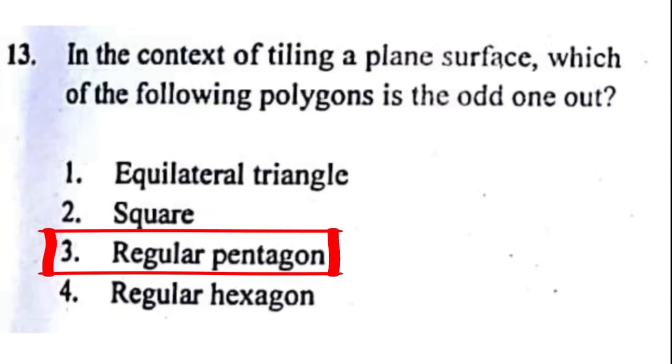Next problem, problem number 13: In the context of tiling a plane surface, which of the following polygons is the odd one out? The correct answer to this problem is option 3, regular pentagon.